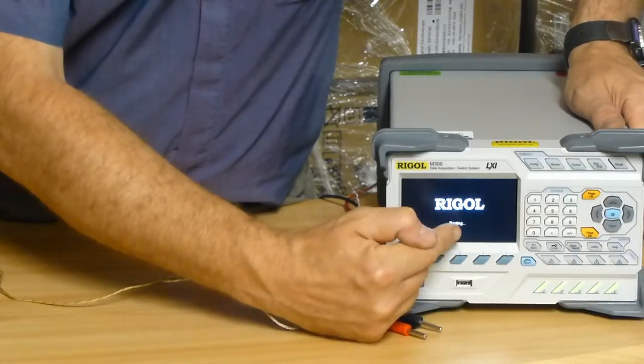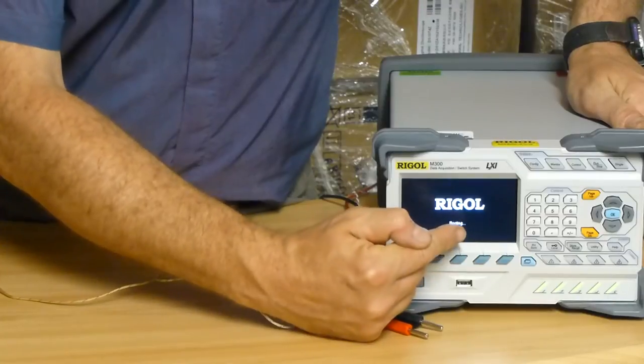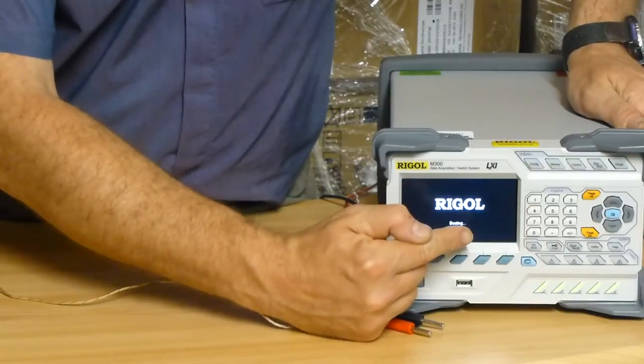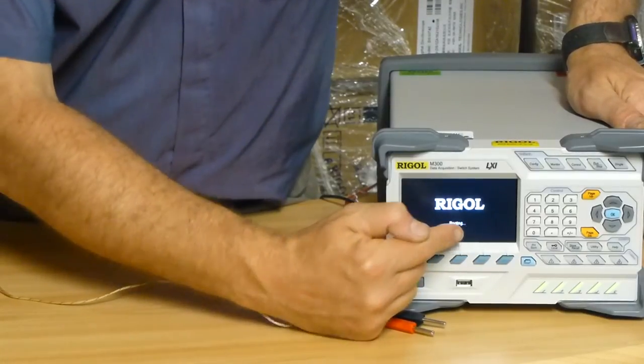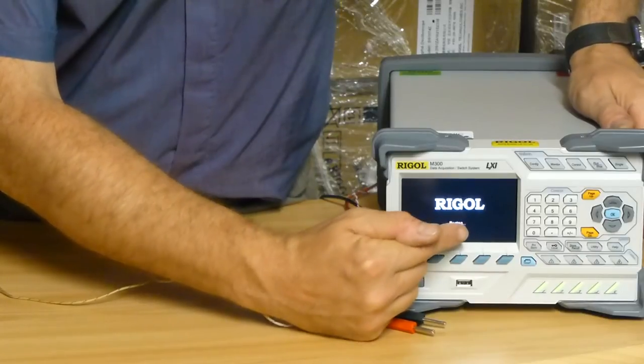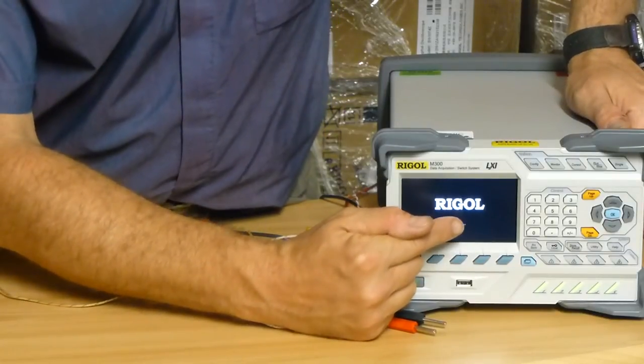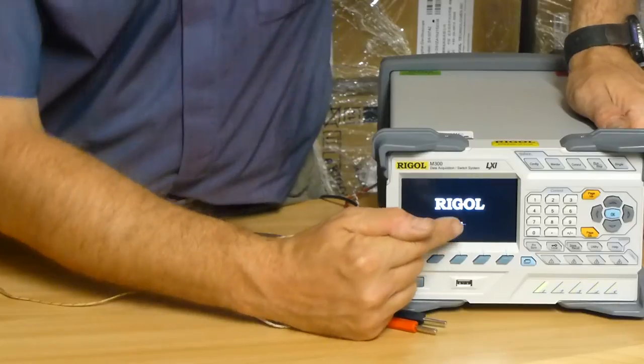You can also measure AC voltage, two-wire resistance and four-wire resistance with the DM3065 module, the MC3065 module fitted.